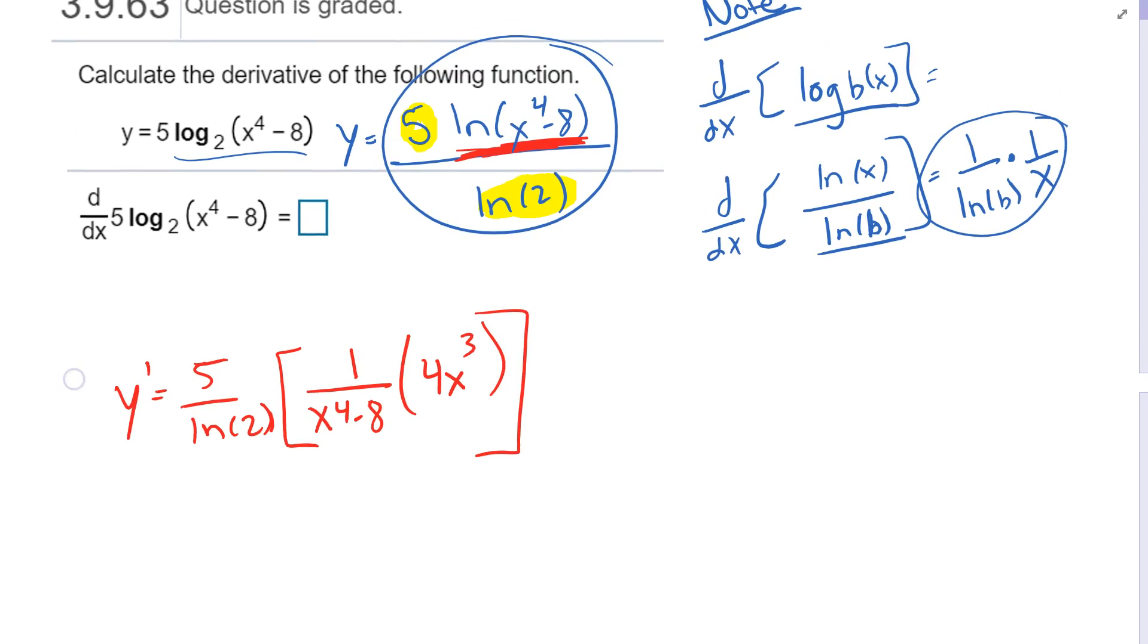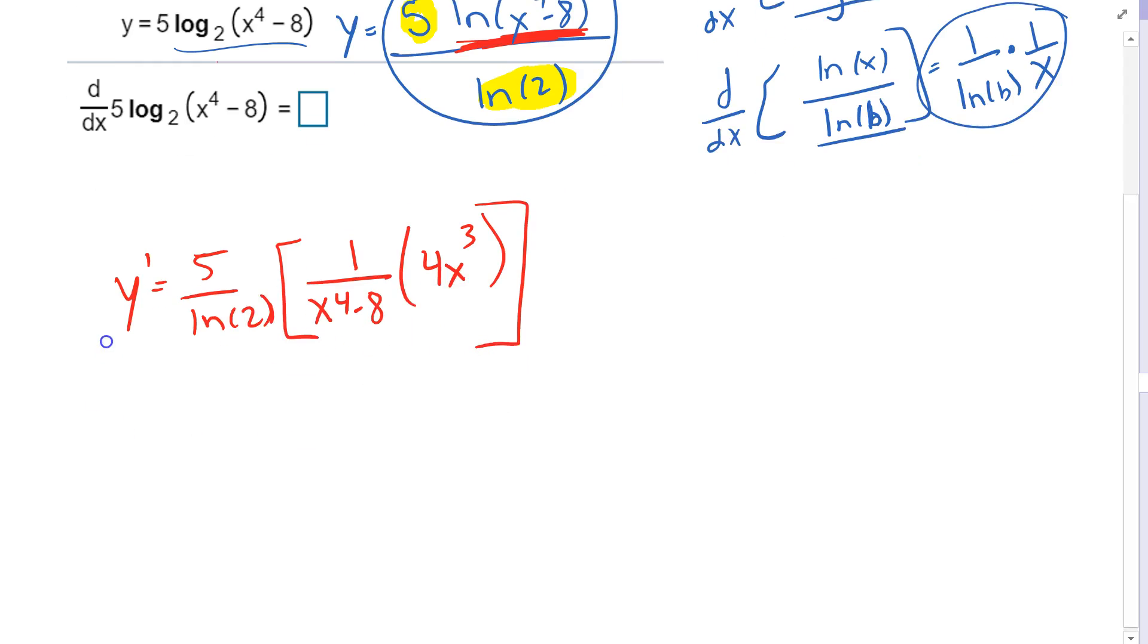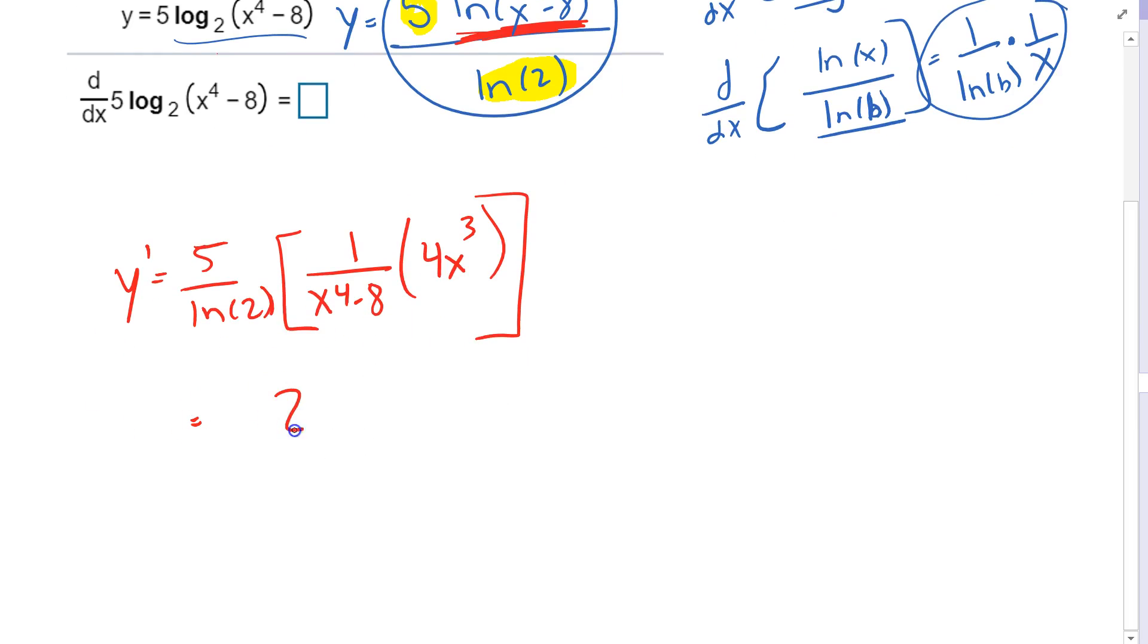So here, I know it looks kind of crazy, but if I change it, I'm just dealing with the constant out front, and I can clean this up, and I would have 20x cubed over ln of 2 times the quantity x to the 4th minus 8.